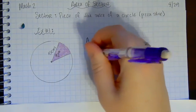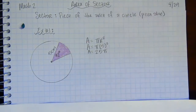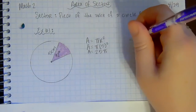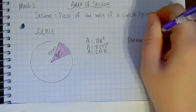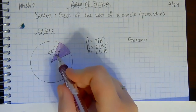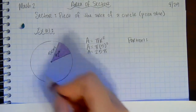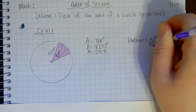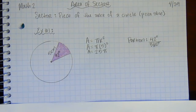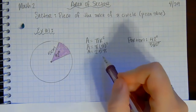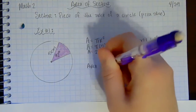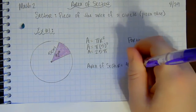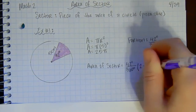5 squared is 25, so the total area is 25π. But I don't have the whole circle — I only have this piece — so I need to find out how much of the circle I have. My portion of the circle is 42 degrees out of a full 360 degrees, because the whole circle is 360. To find the area of my sector, I'm going to multiply my portion times my area.